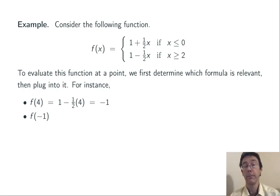Now let's do f of negative one. We look at the inequalities and we see that negative one is less than or equal to zero, so we're in that top branch. We plug into one plus one half x and simplify to get that f of negative one is one half.